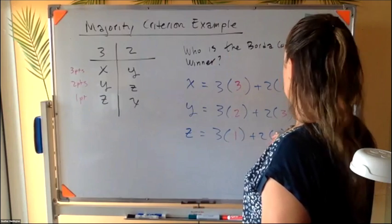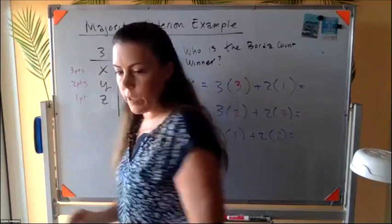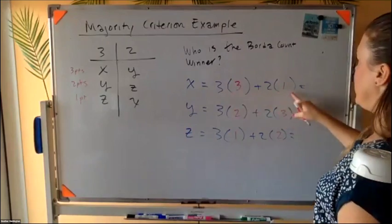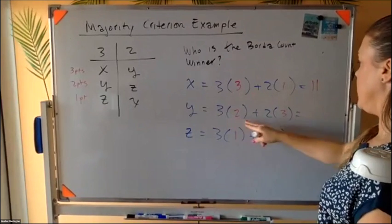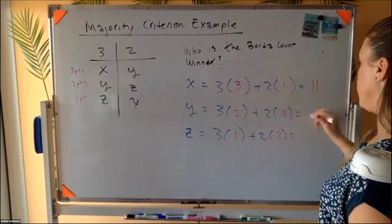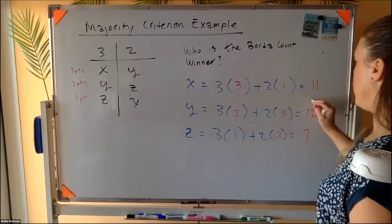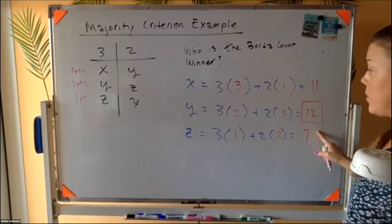All right. So who's the Borda count winner for this situation? So here we have nine plus two is 11. Six plus six is 12. Right? Four and three is seven. So it looks like Y is the winner because it has the highest Borda score.